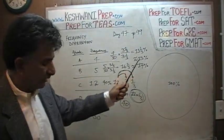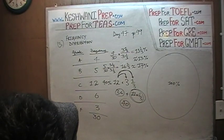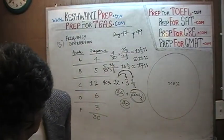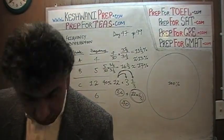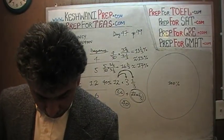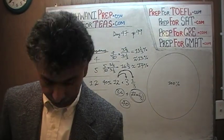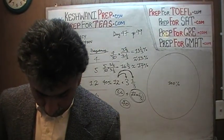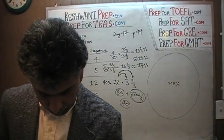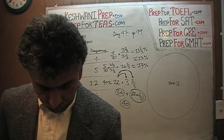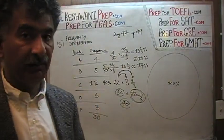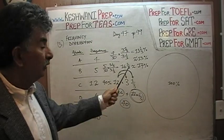The problem asks: what fraction of the circle would be needed to represent the number of students who received a B on the exam? Reading verbatim: the grade distribution on the examination for a class of 30 students is shown above. If a pie graph is used to represent the grade distribution, what fraction of the circle would be needed to represent the number of students who received a B? Since they do not use the word 'approximately,' we have to say 16 and two-thirds percent.